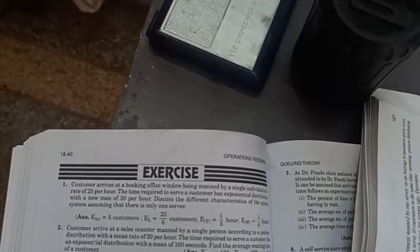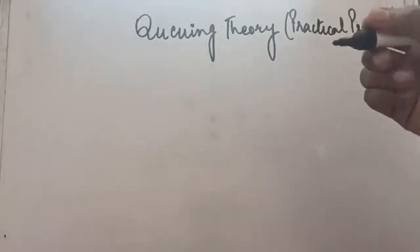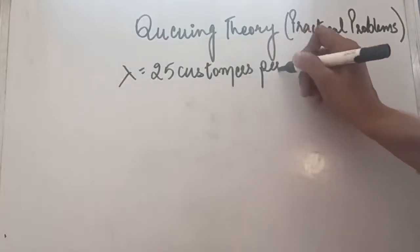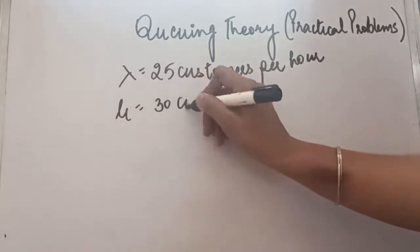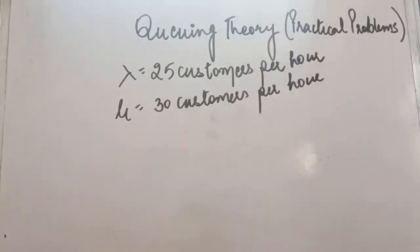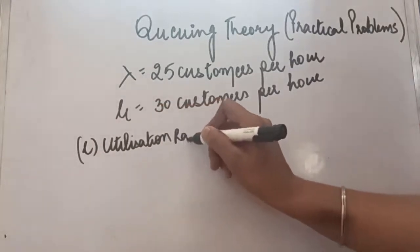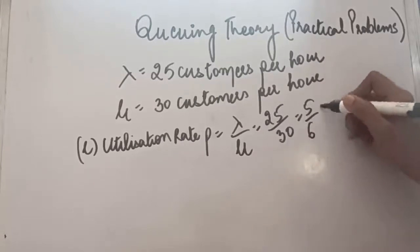Since there is one server, we know which formulas to apply. Here, lambda is 25 and mu is 30. First, we find the utilization rate, denoted as small p, which is lambda upon mu — that is 25 by 30 — so it comes out to be 5 upon 6 per hour.